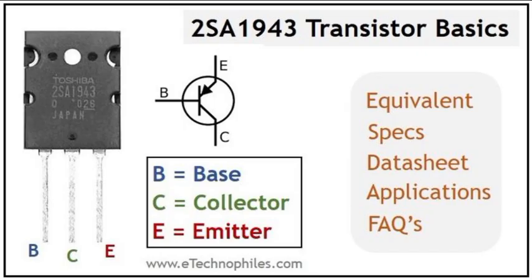Technical Specifications. Transistor Type: NPN. Collector-Emitter Voltage: 230V. Collector-Base Voltage: 230V. Emitter-Base Voltage: 5V. Collector Current: 15A maximum. Power Dissipation: 150 Watts.